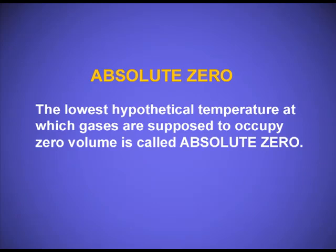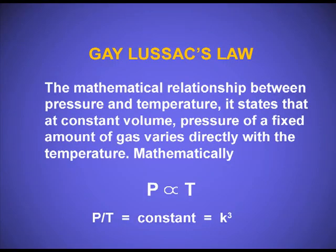Absolute zero is the lowest hypothetical temperature at which gases are supposed to occupy zero volume. The third law is Gay-Lussac's Law, which correlates pressure and temperature when volume and the mass of the gas are constant. As per this law, pressure is directly proportional to temperature. At constant volume, pressure of a fixed amount of gas varies directly with temperature. Mathematically, P is directly proportional to T, and P/T = K3, where K3 is the proportionality constant.